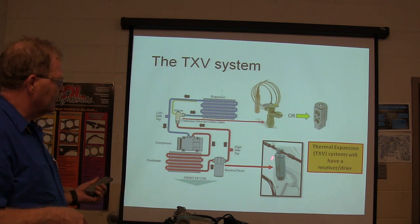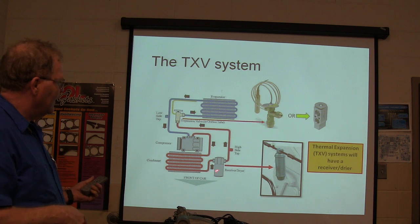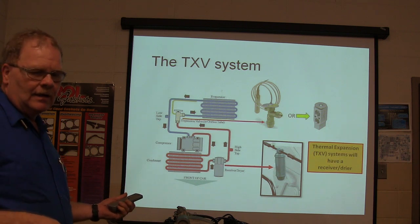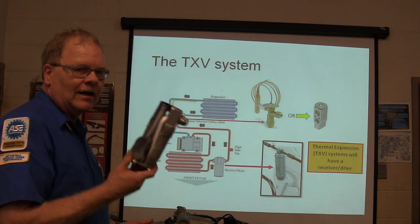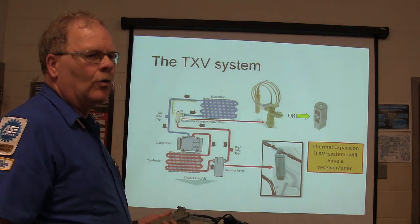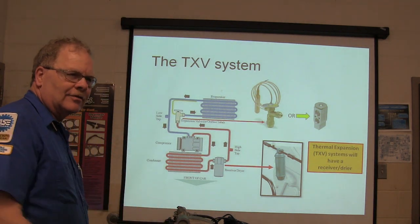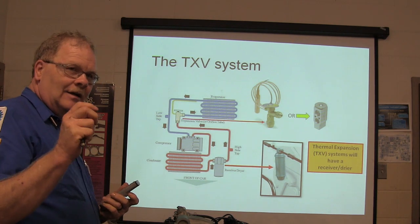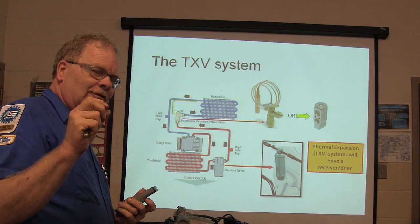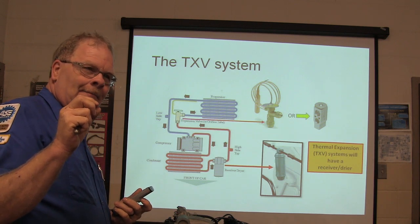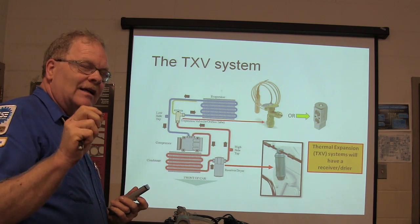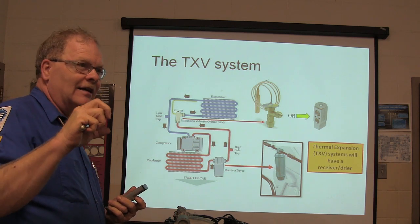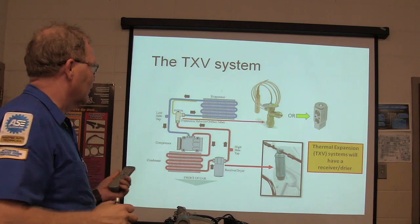A thermal expansion valve system will have a receiver dryer. If it's got a receiver dryer, it's going to be on the high side and it'll be smaller. Why would they make it smaller? You've got more pressure, so you need less square inches. You know that on a brake line you've got like 2,000 pounds of pressure — that's why the brake lines are so tiny. If you've got a big line, it has to be seriously strong because of the square inches involved.